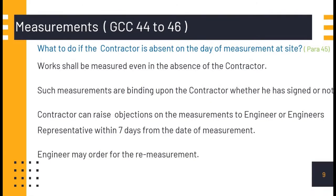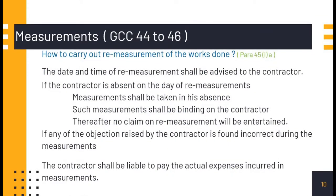The engineer may order a remeasurement. For remeasurement, the date and time shall be advised to the contractor. If the contractor is absent on the day of remeasurement, measurements shall still be taken in his absence and shall be binding on the contractor. Thereafter, no claim on remeasurement will be entertained. If any objections raised by the contractor are found incorrect during remeasurement, the contractor shall be liable to pay the actual expense incurred in remeasurement.